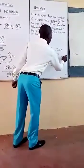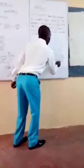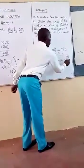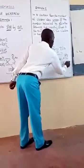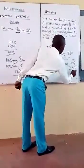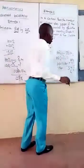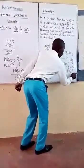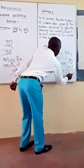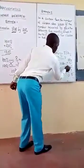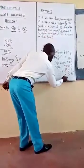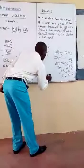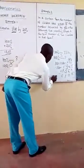Then you multiply 108 multiplied by 75. 5 times 8 is 40, write 0 carry 4. 5 times 0 is 0, plus 4 is 4. 5 times 1 is 5. 7 times 8 gives you 56, write 6 carry 5. 7 times 0 is 0, plus 5 is 5. 7 times 1 is 7. You add: 0, then 4 plus 6 is 0 carry 1, then 1 plus 5 plus 5 is 11 carry 1, then 1 plus 7 is 8. So, the new number of children after increasing by 8% becomes 8,100. That is it.